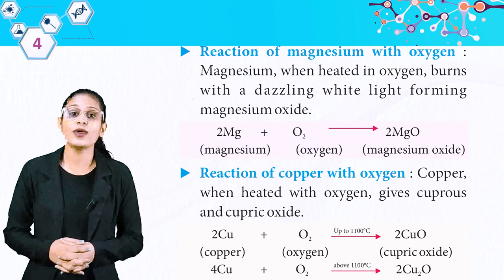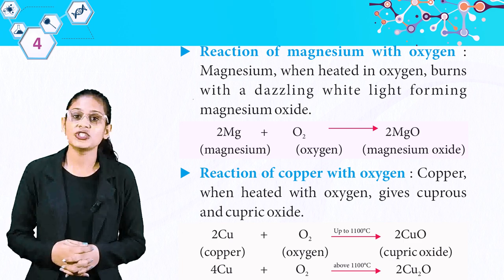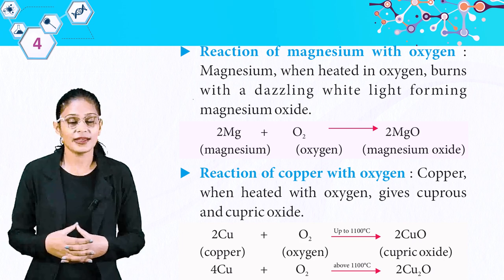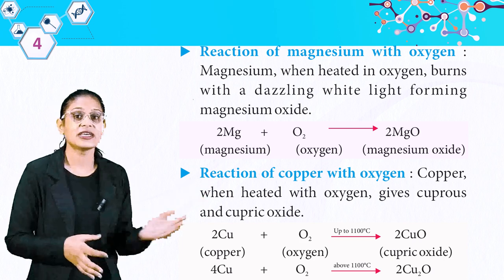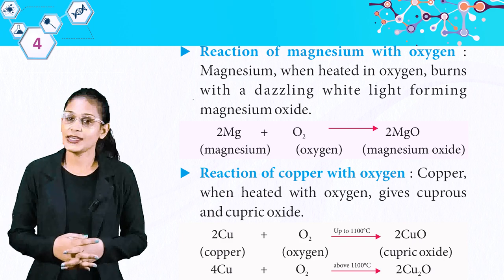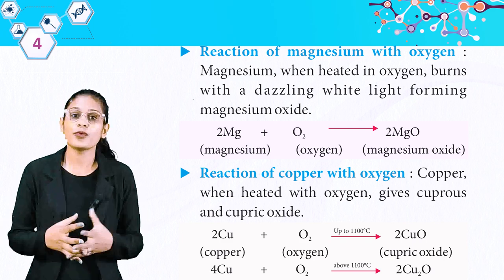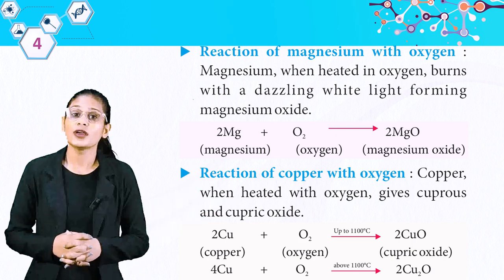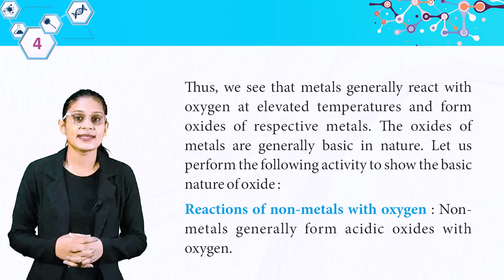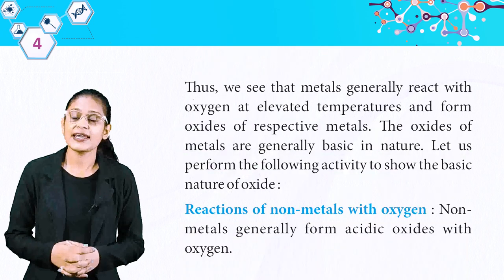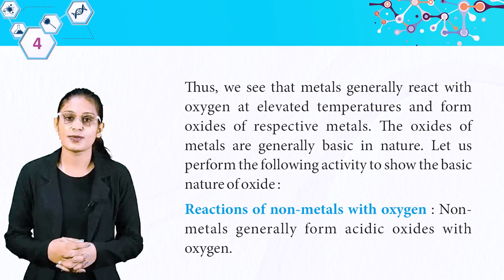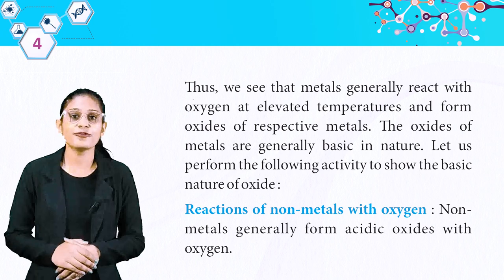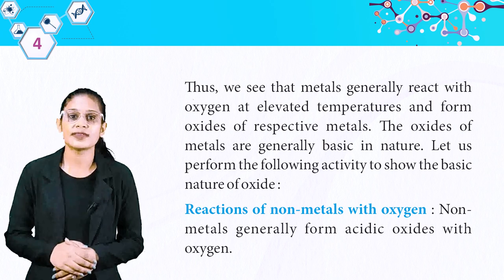Reaction of magnesium with oxygen: magnesium, when heated in oxygen, burns with a dazzling white light forming magnesium oxide. Reaction of copper with oxygen: copper, when heated with oxygen, gives cuprous and cupric oxide. Thus we see that metals generally react with oxygen at elevated temperatures and form oxides of respective metals. The oxides of metals are generally basic in nature.